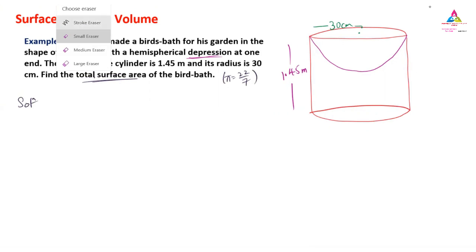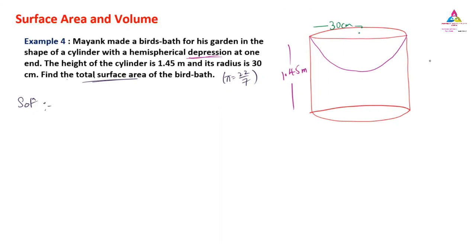To find the total surface area, concentrate carefully. We have a cylindrical shape, so the cylinder will have a curved surface area. The hemispherical bowl is inside at the top, so we will have the curved surface area of the hemisphere. At the bottom we will have a circle, and above the circle will be open because it is hollow there.